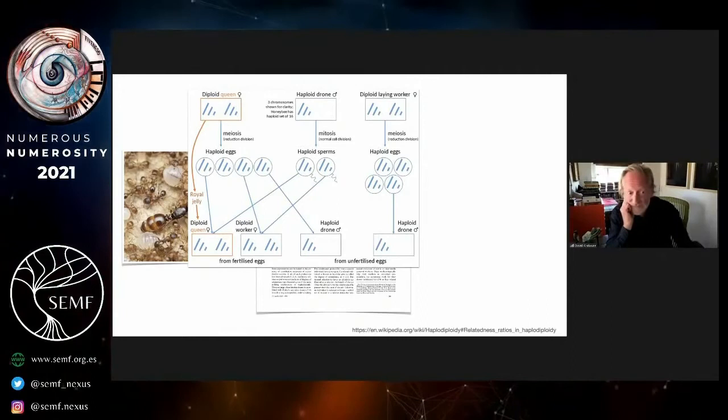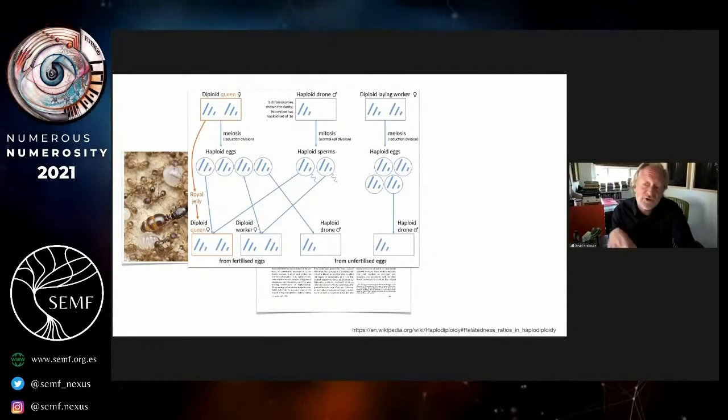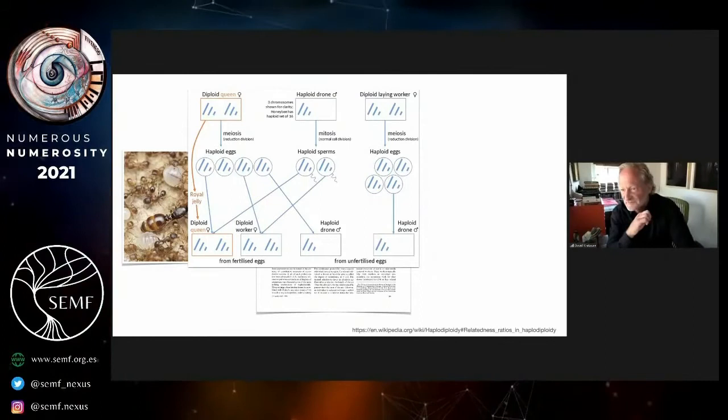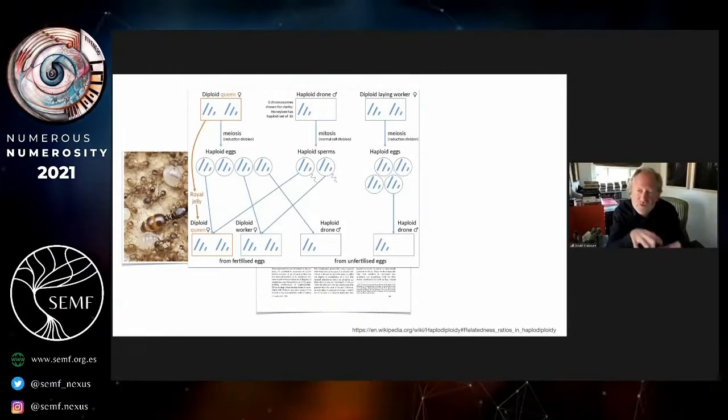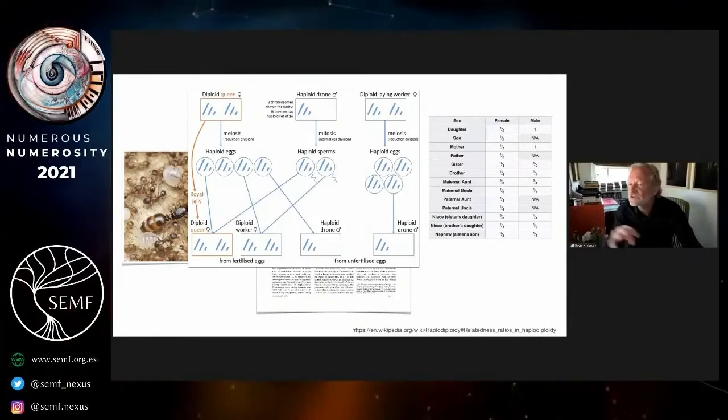A male drone, which is haploid to begin with, not diploid, can fertilize the queen's eggs, and they'll either produce a diploid worker or, if that embryo is fed with royal jelly, a queen. The queen can also directly produce a haploid drone from an unfertilized egg.